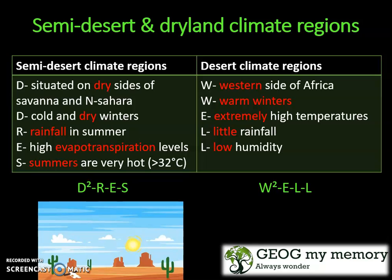The semi-desert and dryland climate regions encompass the semi-desert climate region and the desert climate region. The semi-desert climate region is situated on the dry sides of the savannah and northern Sahara. It has cold and dry winters and rainfall in summer, high evapotranspiration levels, and very hot summers. You can remember this using the acronym DRESS.